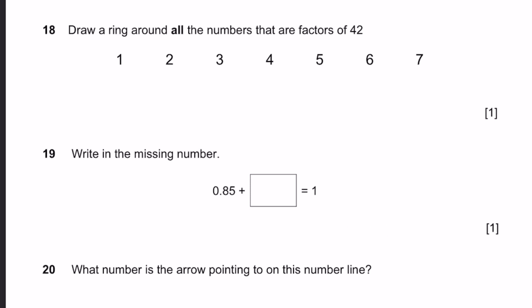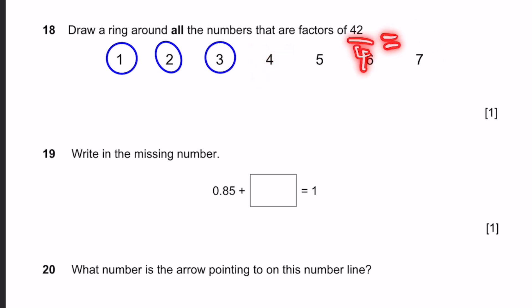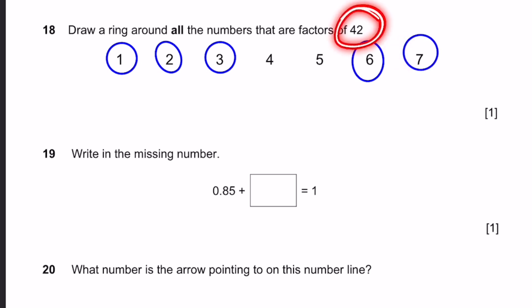Question 18. Circle all the numbers which are factors of 42. 1 is a factor of every number. Because 42 is even, 2 is also a factor. 42 divided by 3 equals 14, so 3 is a factor. 4 is not a factor — 42 divided by 4 is 10.5, a decimal. 5 is not a factor — 42 divided by 5 is 8.4. But 6 and 7 are factors, because 6 times 7 equals 42.